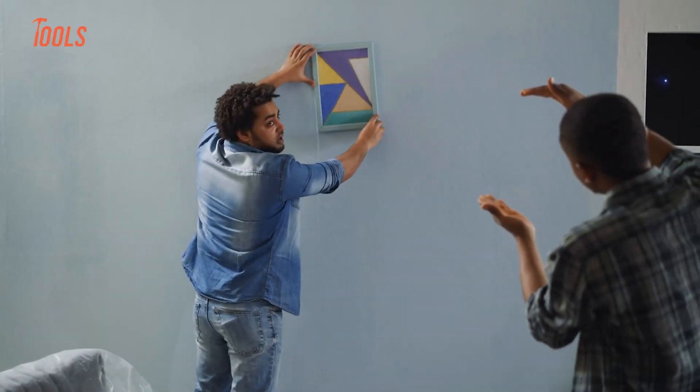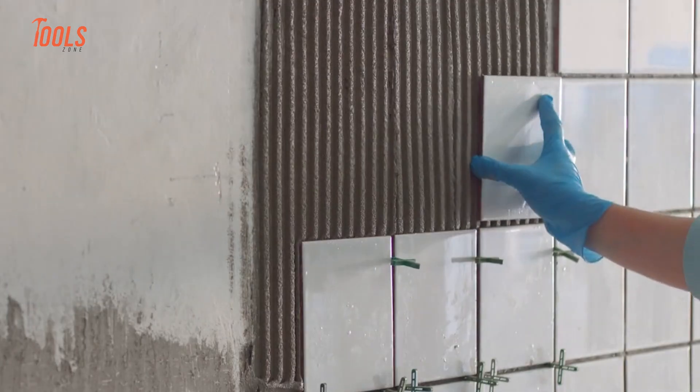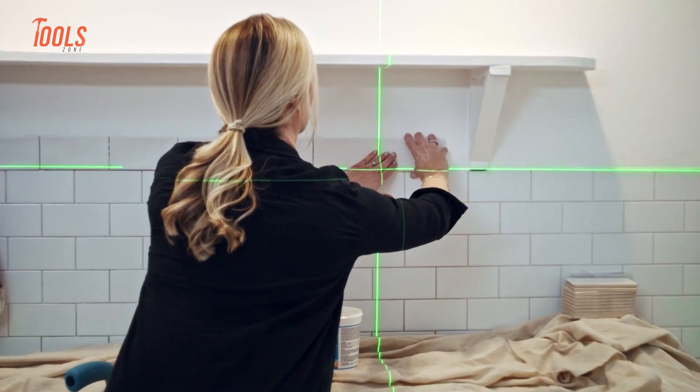If you've ever done any home project that needed things to be perfectly straight, like hanging shelves, tiling a wall, or framing a door, you've probably come across a laser level.